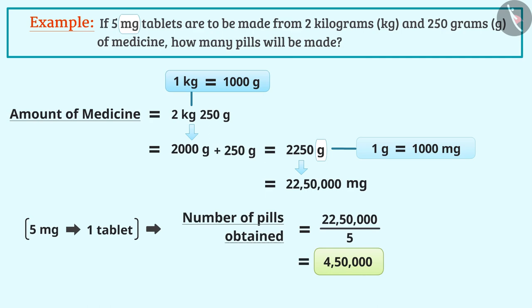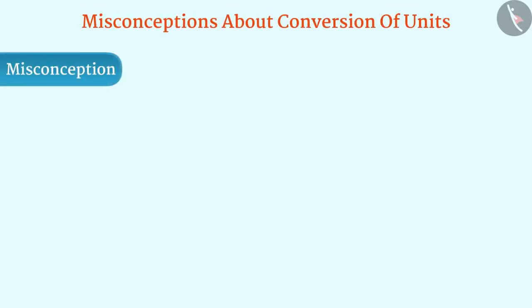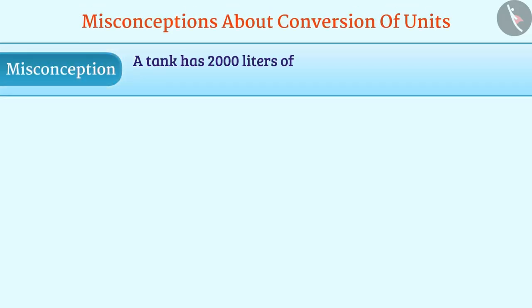Now, let's look at a misconception. A tank has 2000 liter of water. How would you express 2000 liter of water in milliliters?